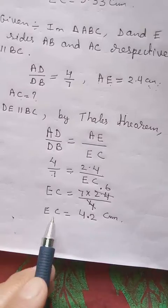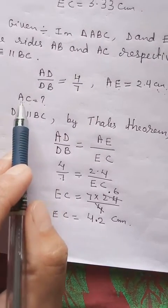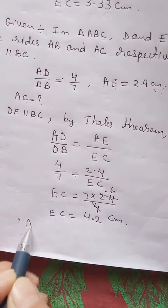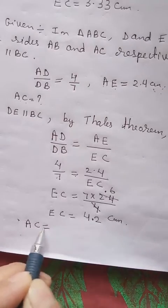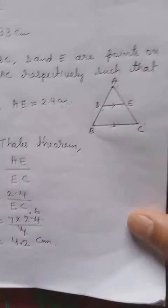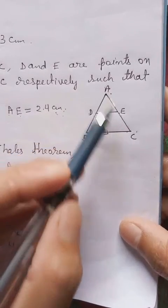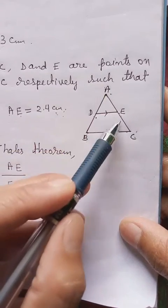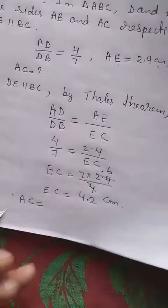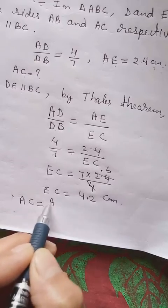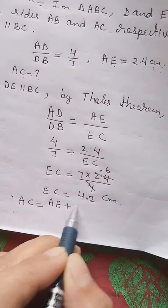But remember we get EC. But the aim of the question is to find AC. So that means we have to complete it. Look from the figure what is AC. Clearly we can break it into AE plus EC.